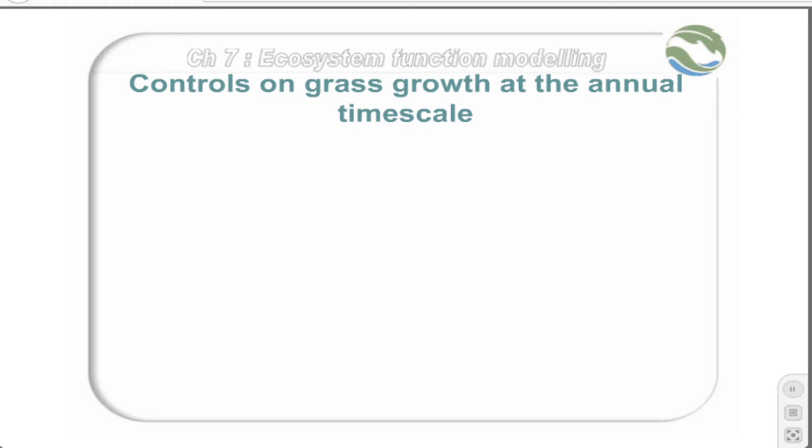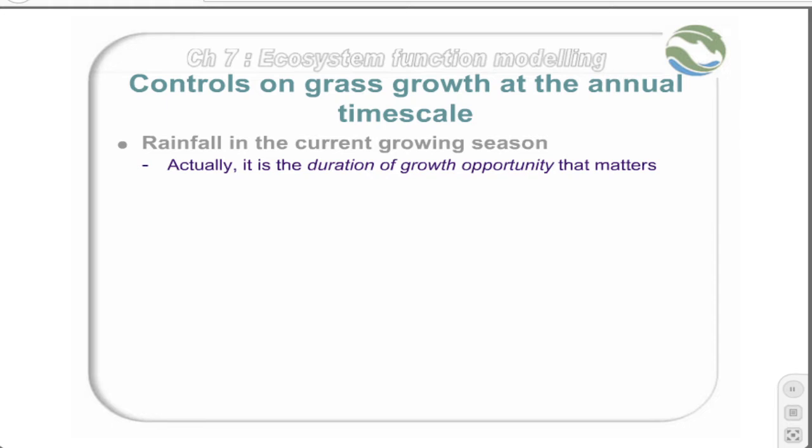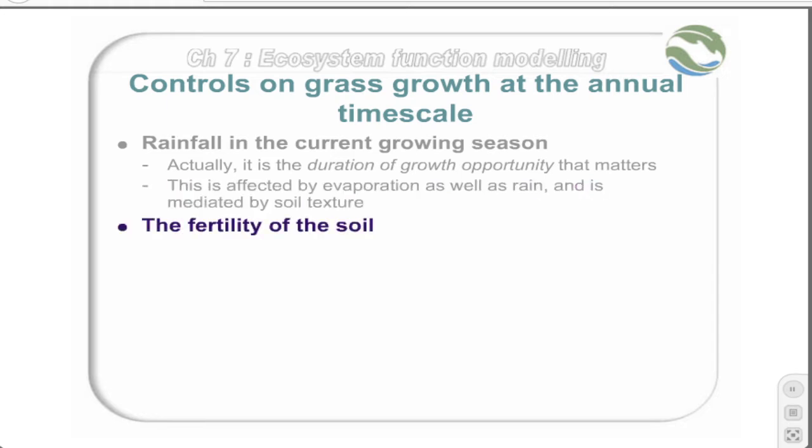These are the main factors known to control how much grass grows every year. The first of these is the rainfall, although it is not so much the quantity of rain that matters as the duration of growth opportunity. This factor is affected by evaporation, as well as rain, and the effects of soil texture on the drainage of water from the soils plays an important role. The soil fertility is important, and tree cover plays a role, because grass typically does not grow well under shade. Daytime temperatures must fall within an optimal range for grass growth, and the levels of carbon dioxide in the air can be a significant factor in controlling plant growth. In some fertile savanna ecosystems, moderate grazing also has a mildly stimulating effect on grass growth.